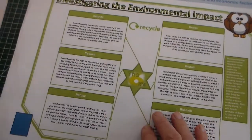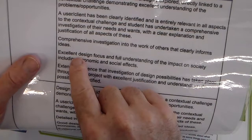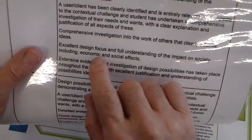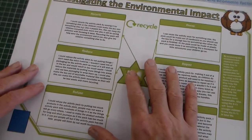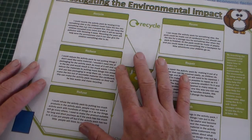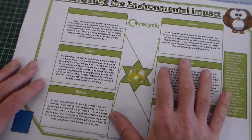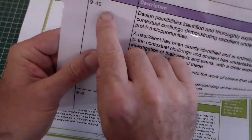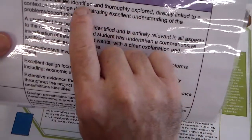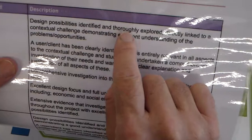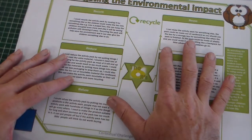I've got two examples here we're going to look at. If we take a look at the mark scheme, in this top band it says: excellent design focus on full understanding of the impact on society, including economic and social effects, which we could also class as environmental effects. The best sheets will be linked, and getting into this top 9 to 10 mark band, you need to link to the contextual challenge. It says design possibilities identified and thoroughly explored, directly linked to a contextual challenge. So a sheet that just looks at general environmental impact won't get into that top band.